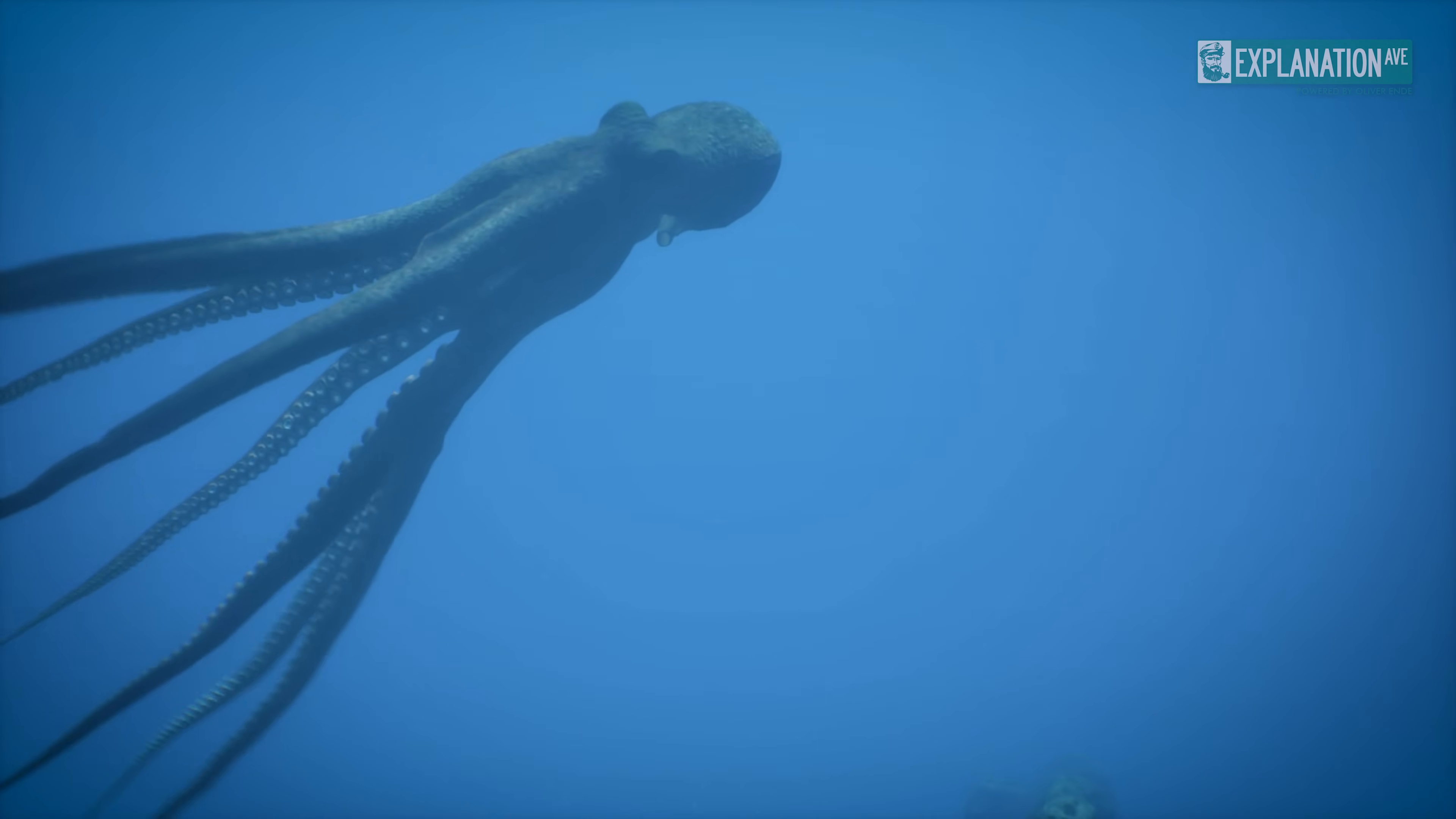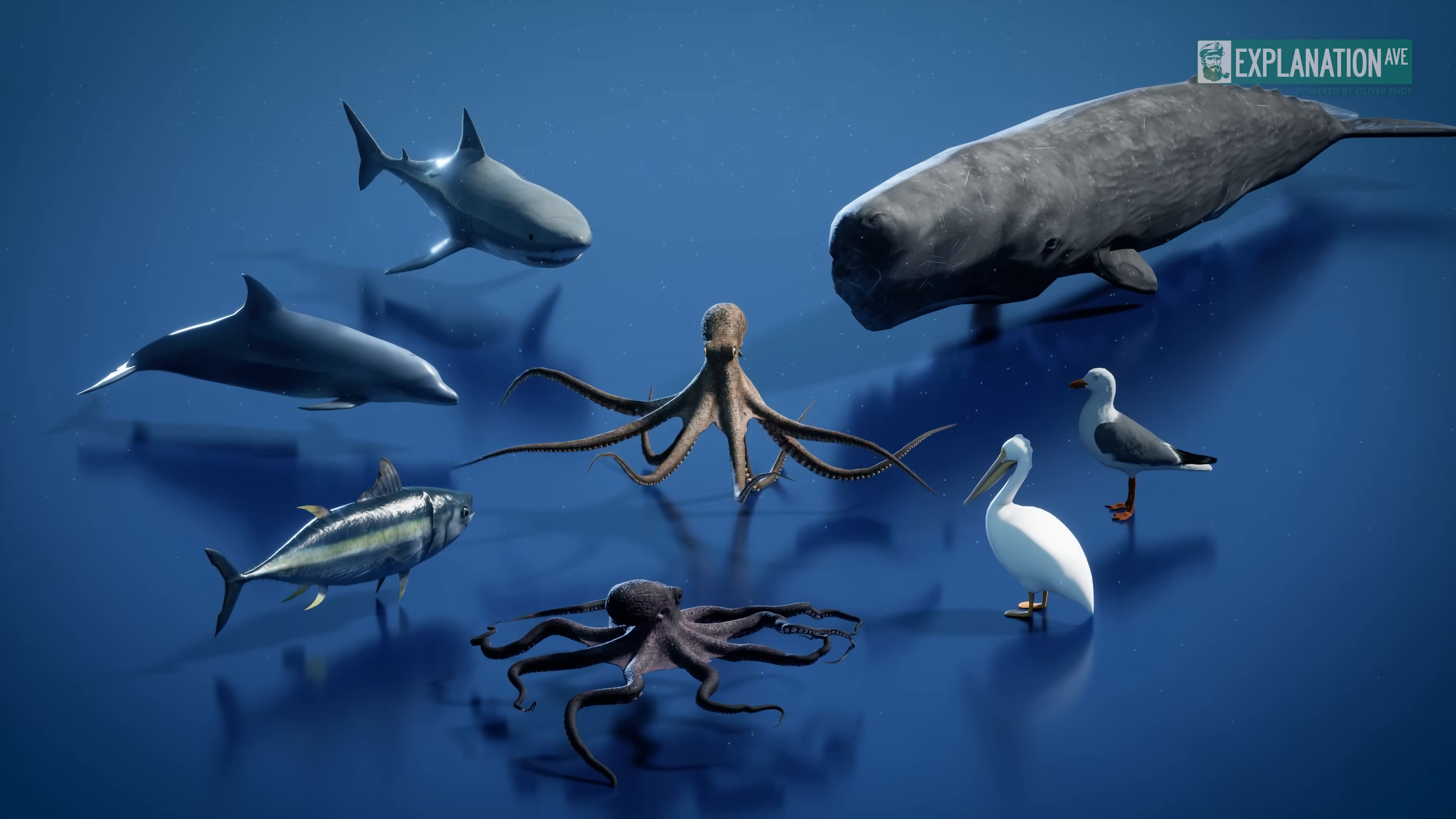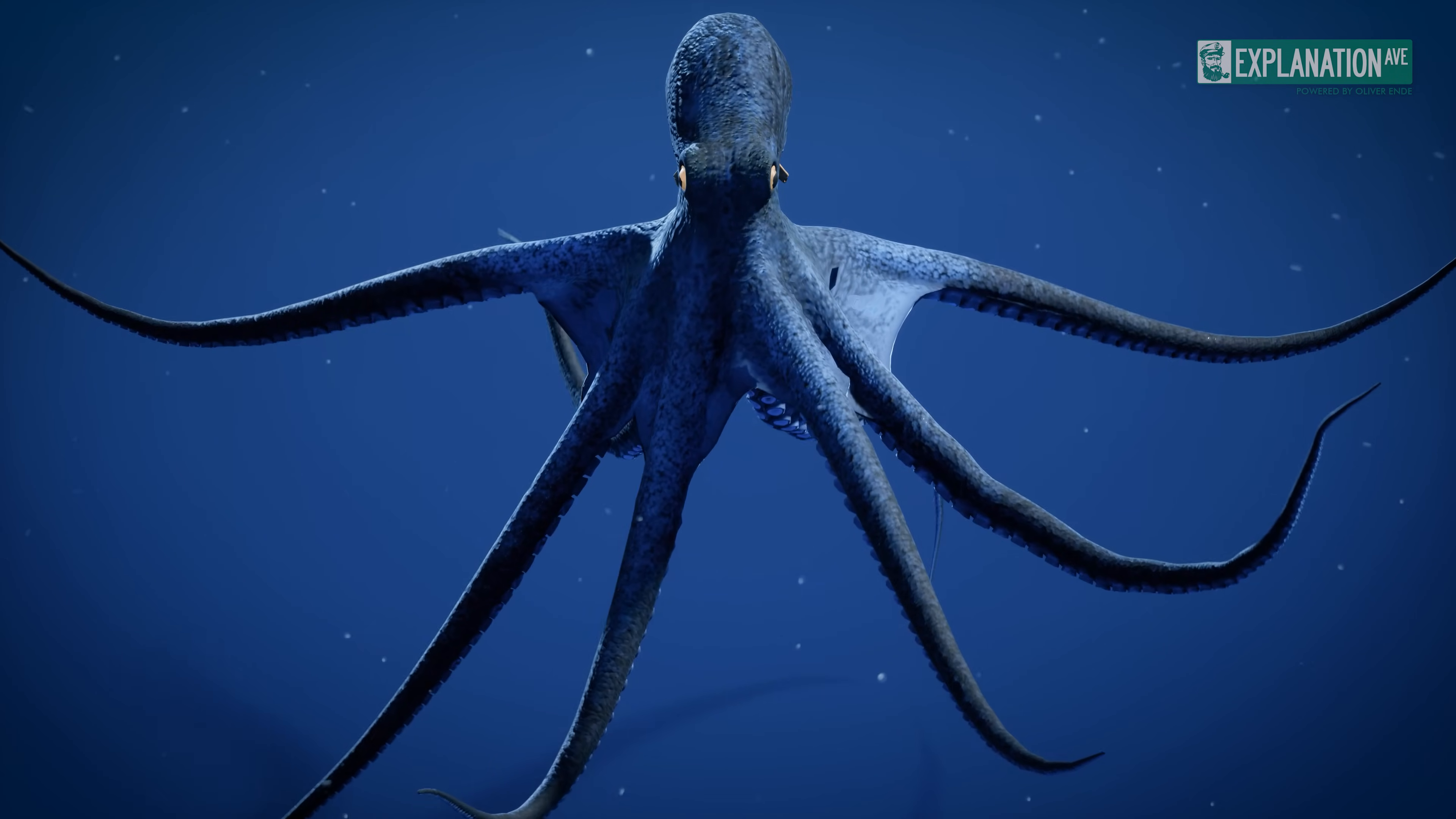Each of these methods of locomotion offers the octopus different advantages depending on the environment and situation. As a soft, muscular, and nutritious animal, the octopus is exposed to many dangers in the ocean. Numerous predators, including sharks, bony fish, marine mammals, seabirds, and other cephalopods hunt them for their easily digestible, protein-rich bodies. Unlike other mollusks, such as snails and clams, cephalopods are virtually defenseless as they have lost their outer shell. However, their ability to camouflage, made possible by highly developed skin tissue, offers a life-saving advantage.